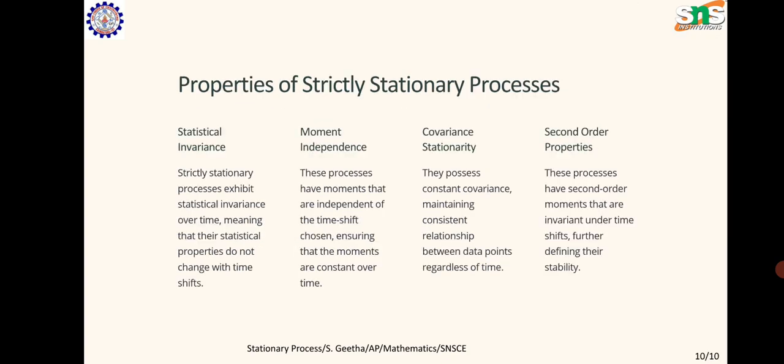Properties of strictly stationary processes. Statistical invariance: Strictly stationary processes exhibit statistical invariance over time, meaning that their statistical properties do not change with time. Moment independence: These processes have moments that are independent of the time shift chosen, ensuring the moments are constant over time. Covariance stationarity: They possess constant covariance, maintaining consistent relationships between data points regardless of time. Second order properties: These processes have second order moments that are invariant under time shifts, further defining their stability.